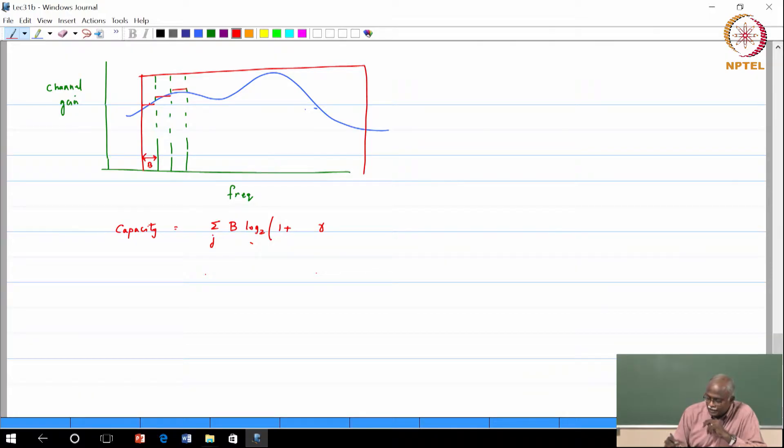And whatever is your channel gain, magnitude H of J - it should be H of J omega, continuous time frequency magnitude squared - that is the gain that you are seeing. I am just going to write it as magnitude H of J. So imagine H of J squared times gamma. So what did we do? I know how to get the capacity of a signal with a certain bandwidth B which has got a flat gain.